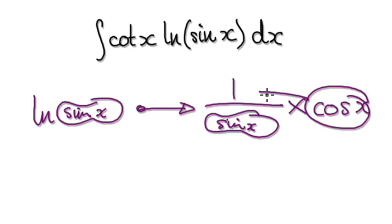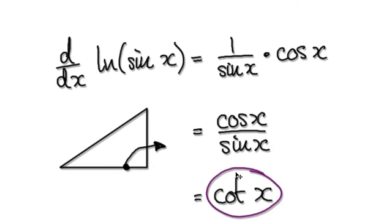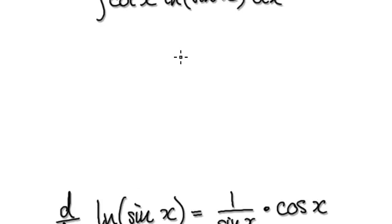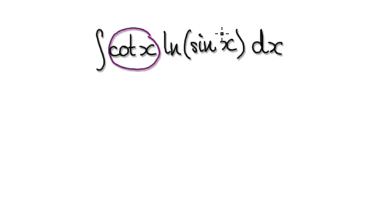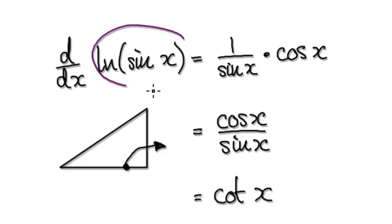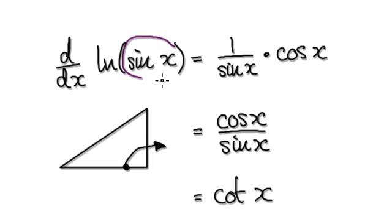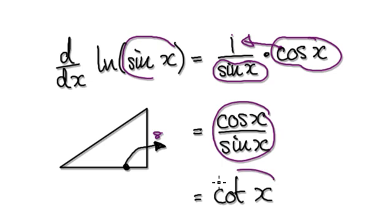So when you differentiate this, this gets multiplied to the top, giving you this. The point here is that you're trying to integrate this whole thing. Visualise it as one thing multiplying another. If you try to differentiate this, you would get 1 over the bubble, and then times the derivative of the bubble itself. So this gets multiplied to the top, giving you this. And this, don't forget, is cotangent of x.